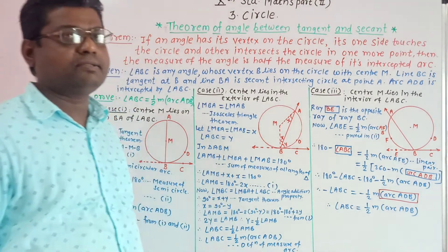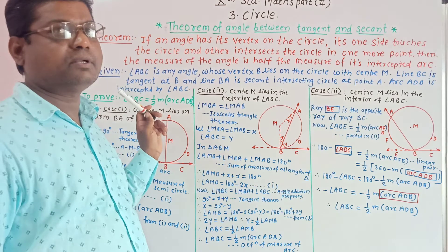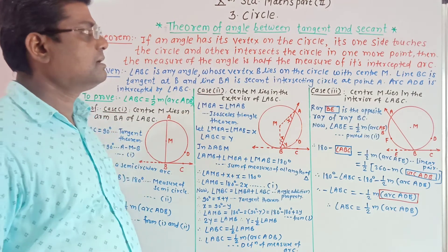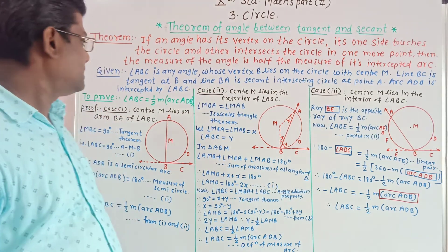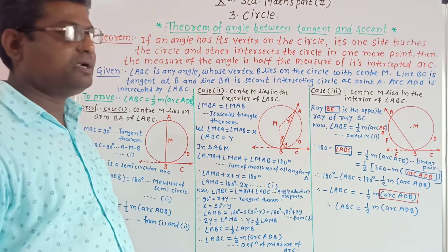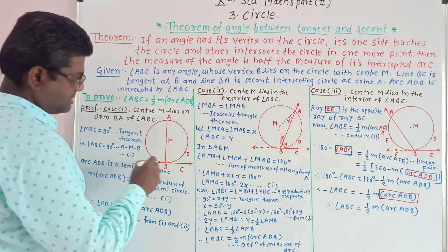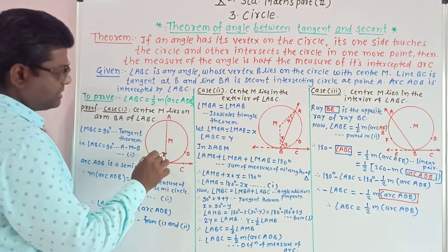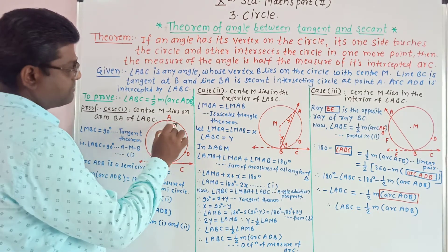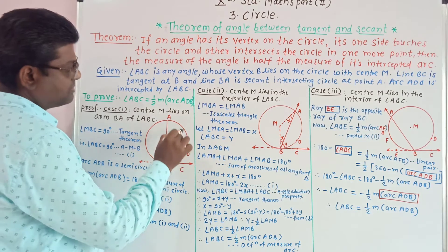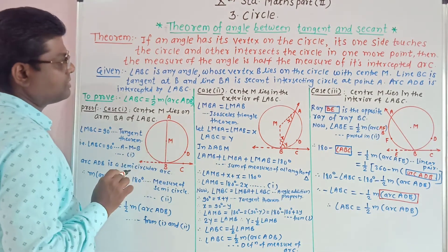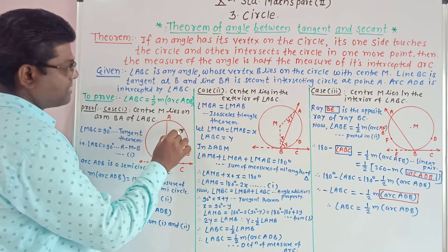10th standard math, part 2, lesson number 3: circle. There is one theorem — theorem of angle between tangent and secant. There are 3 cases. Angle between tangent and secant means this angle is equal to half of the intercepted arc. That is, angle ABC is equal to half into major of arc ADB.